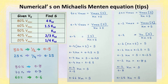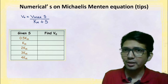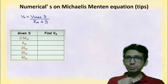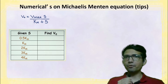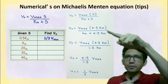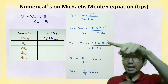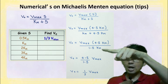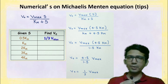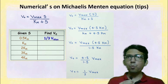Now let's solve cases where substrate concentration is given and we find v0. If the substrate concentration s is 0.5 times km, then s is replaced by 0.5 km in the equation. The km terms cancel out, and the ratio 0.5 divided by 1.5 gives one-third. So if the substrate concentration is half of km, the velocity will be one-third of vmax.